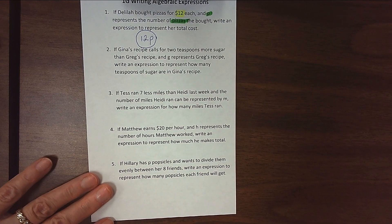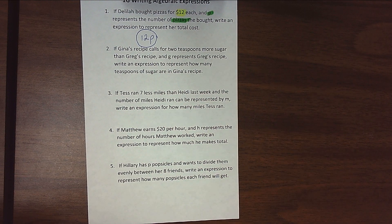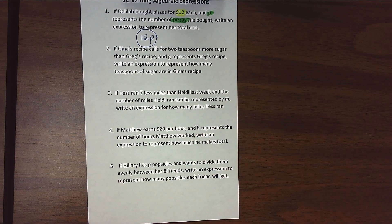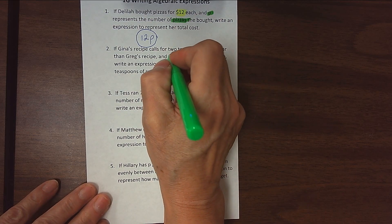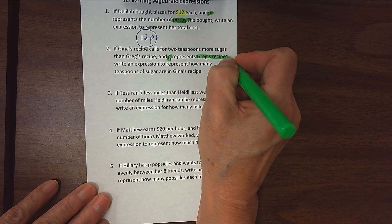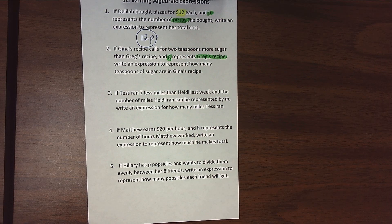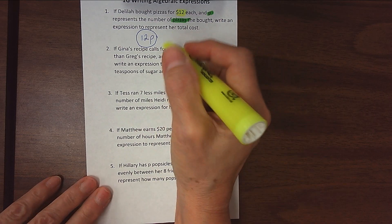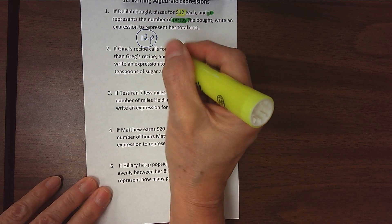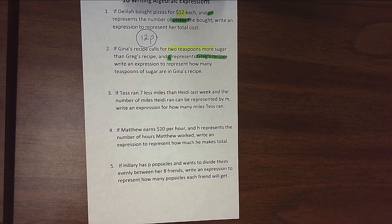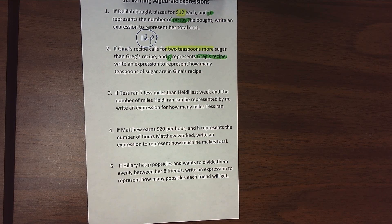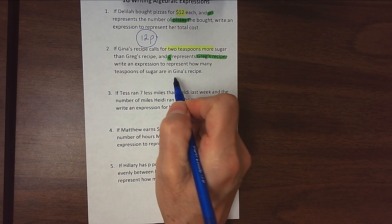All righty, let's look at the next one. If Gina's recipe calls for two teaspoons more sugar than Greg's recipe, and G represents Greg's recipe, so what's the variable? The variable is Greg's recipe. And what do we know about Gina's? Gina's has two teaspoons more. I see that word 'more'. I'm thinking addition. So this says, write an expression to represent how many teaspoons of sugar are in Gina's recipe.